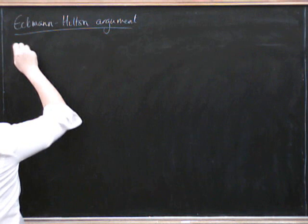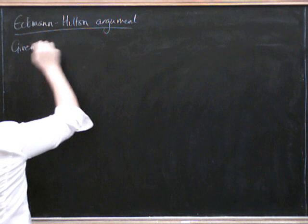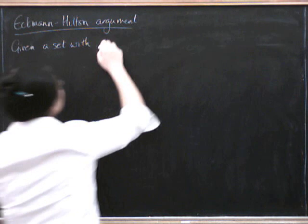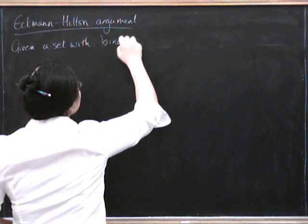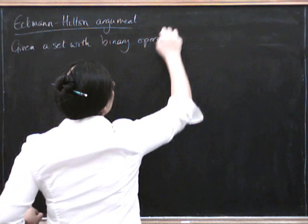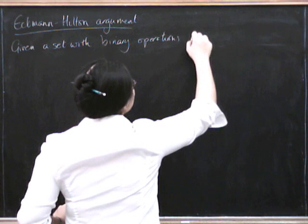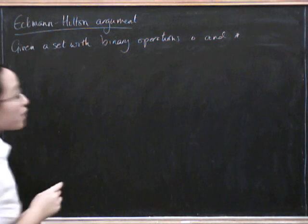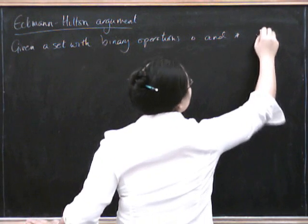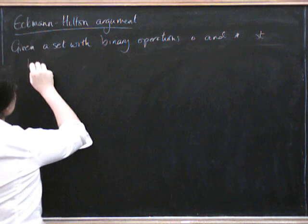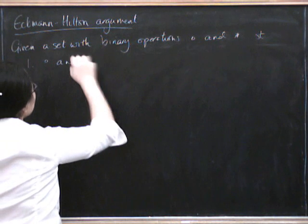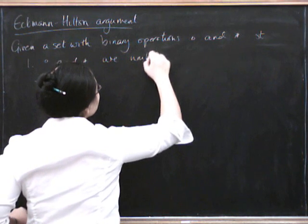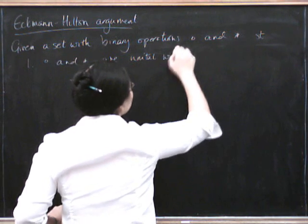So given a set with two binary operations, which we'll write as circle and star, satisfying the following properties such that, one, circle and star are unital with the same unit,